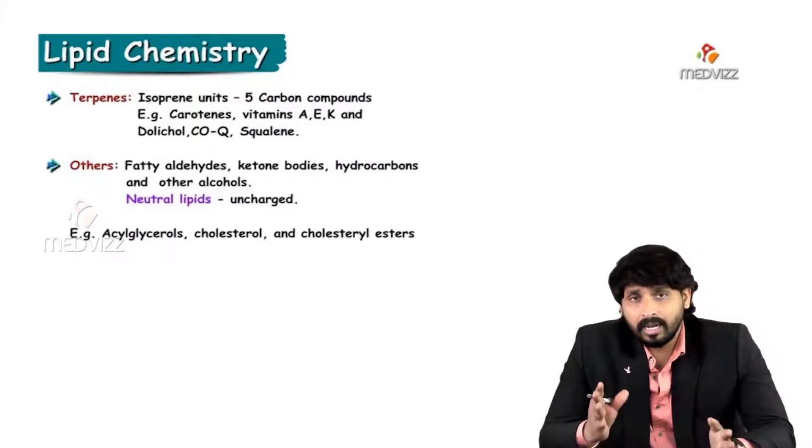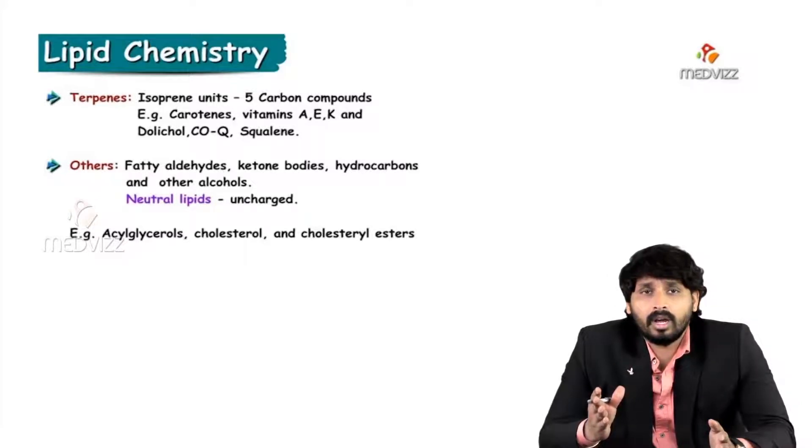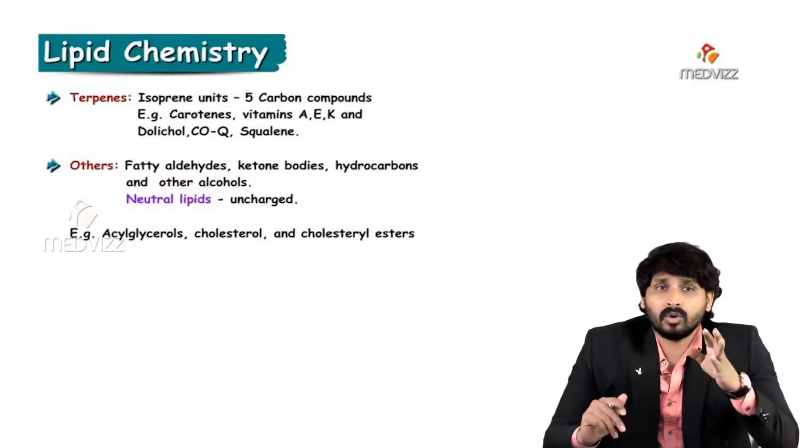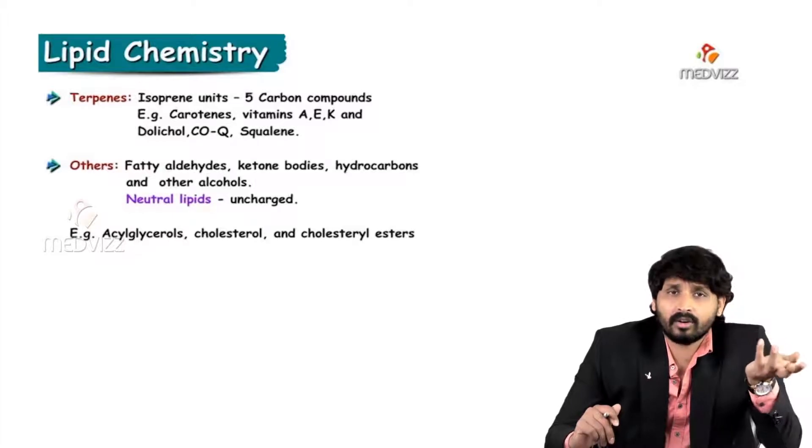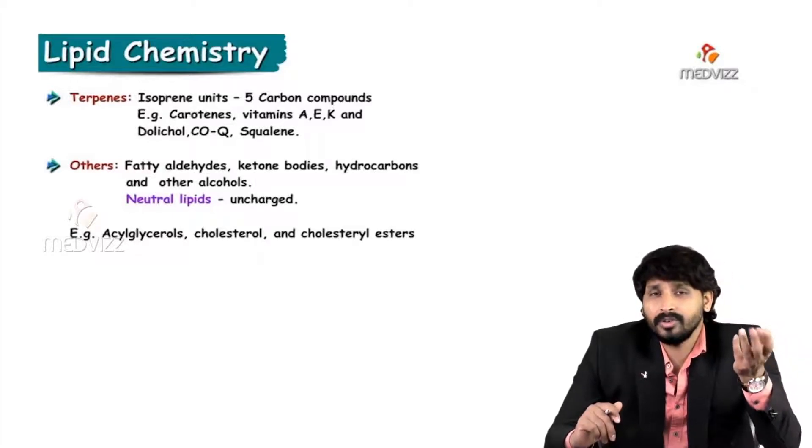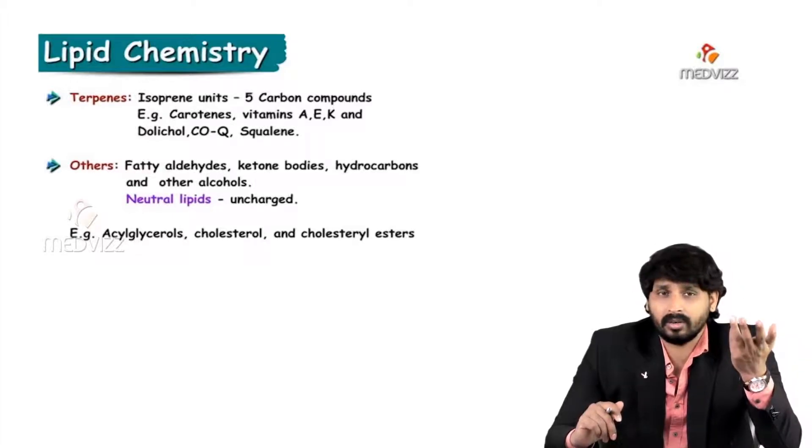So there are other things are like terpenes - isoprene units, which are having five carbon compounds - like carotenes, vitamin A, E, K, dolichol, coenzyme Q, squalene. So these are all which carries isoprene units. And other fatty aldehydes, ketone bodies, hydrocarbons and other alcohols, neutral lipids, which are uncharged.